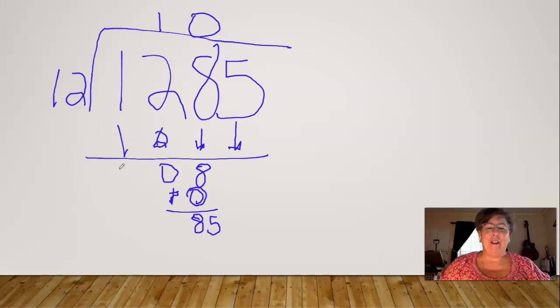And then let's see, 12 times 6 is going to give me 72. 12 times 8 would give us 96, so it's going to have to be a 7. 7 times 2 is 14, 1, 7, 1, 84.